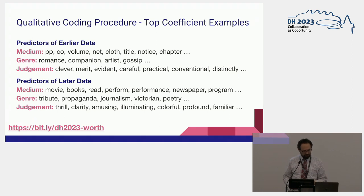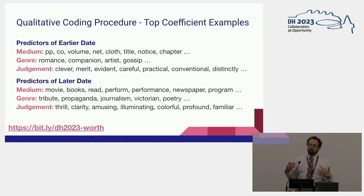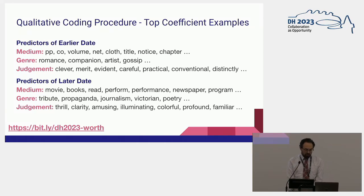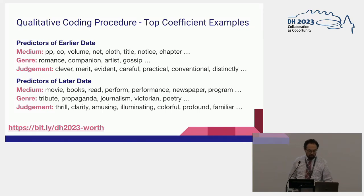These terms are decontextualized, so the idea was to shape a hypothesis, not to draw conclusions. For a later date, medium terms included movie, performance, newspaper, and program — physical manifestations not necessarily all books. Genre terms included tribute, propaganda, journalism, Victorian poetry. And there's a word like thrill, which could go into genre because of the idea of a thriller. There's a certain amount of interpretive judgment being made here.